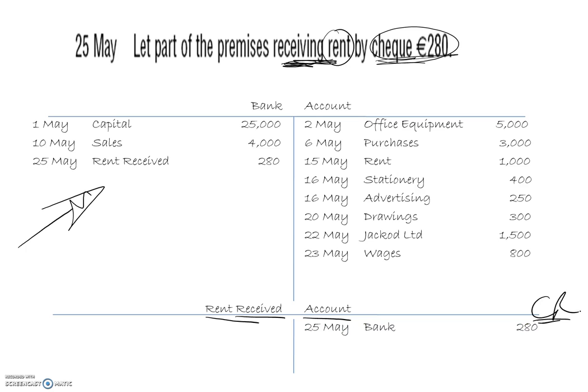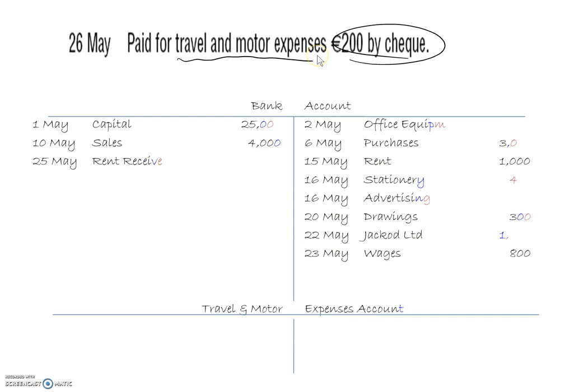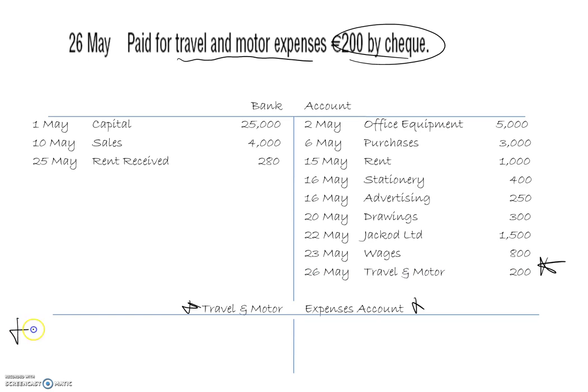26th of May: paid for travel and motor expenses by cheque. Cheque implies bank, and travel and motor expenses is a new expense so we open up an account for it. Money being paid out: we credit the bank and debit the travel and motor expenses account.